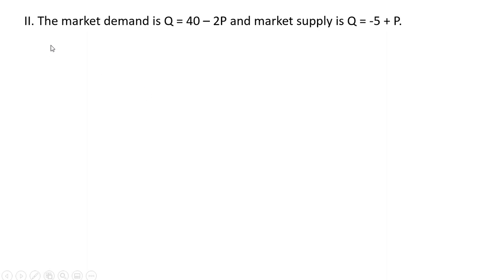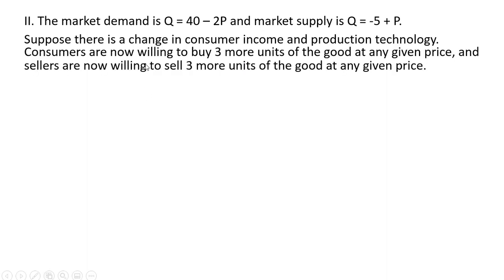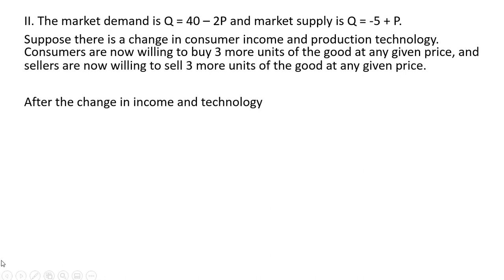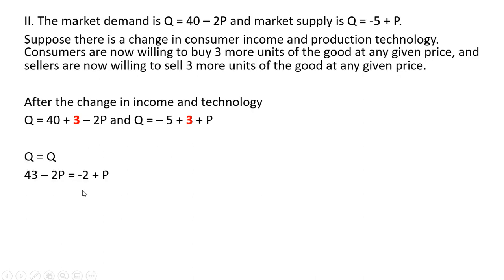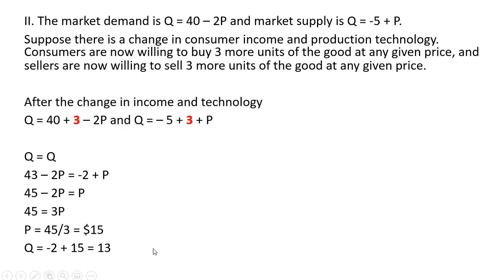Let's do another problem with the same market demand and market supply. This time, suppose the change in consumer income and production technology leads to the following: consumers are now willing to buy only three more units of the good at any given price, and sellers are now willing to sell three more units at any given price. So in this example, the demand curve and supply curve are shifting right by the same amount. Incorporating those changes into our demand and supply equations and simplifying, the equilibrium price is $15.